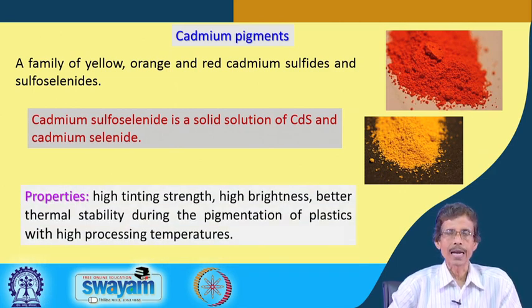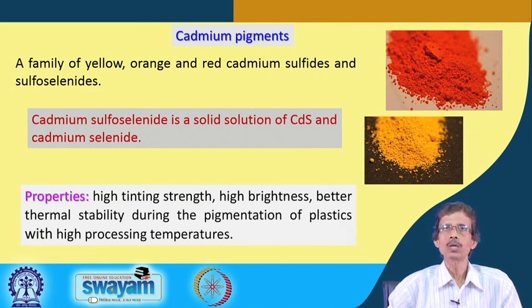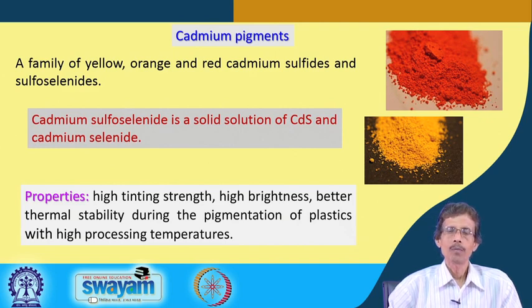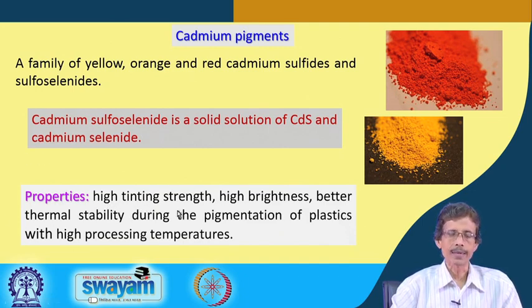Nowadays, cadmium use is being phased out because cadmium is harmful, though it is still used for special purposes like cadmium batteries. Cadmium pigment production is declining. However, cadmium pigments have high tinting strength and high brightness, which is why they were chosen as inorganic pigment materials.